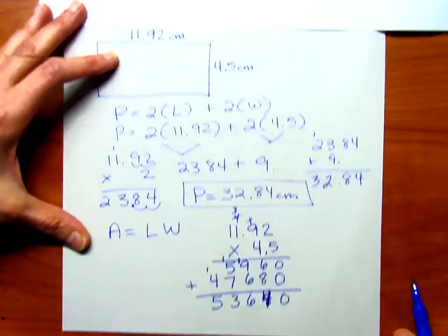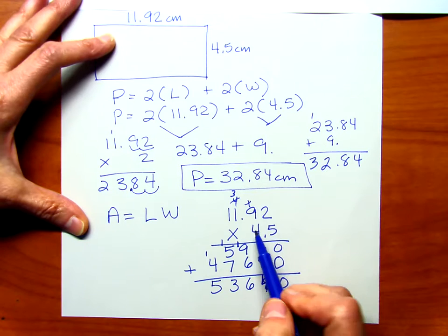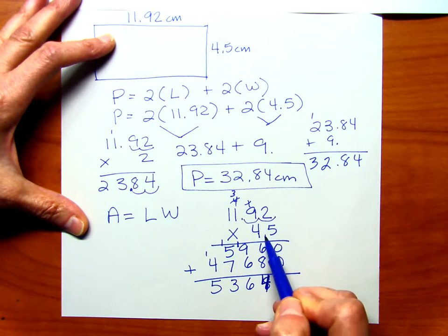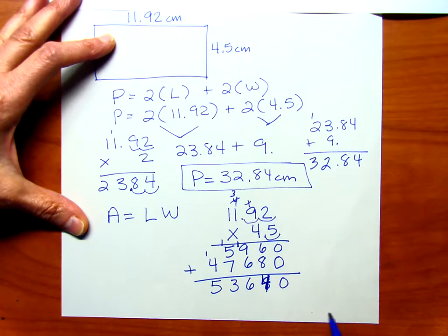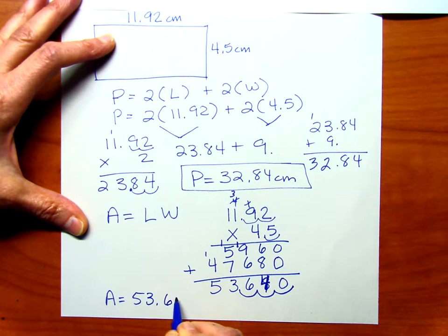Now let's look at our place values here in each factor. We've got 2 here and 1 here, 2 and 1 make 3, so we're going to move 3 to the left, 1, 2, 3. And our answer, so area, is going to be 53 and 640 thousandths centimeters squared.